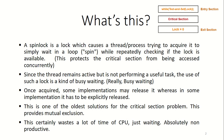The term spin lock has a lock attached to it. This lock causes a thread or process which is trying to acquire it to simply wait in a loop. When the process or thread tries to acquire this spin lock, it will cause it to wait while repeatedly checking if the lock is available. There is a while loop, and this while loop will make it wait, protecting the critical section from being accessed concurrently.